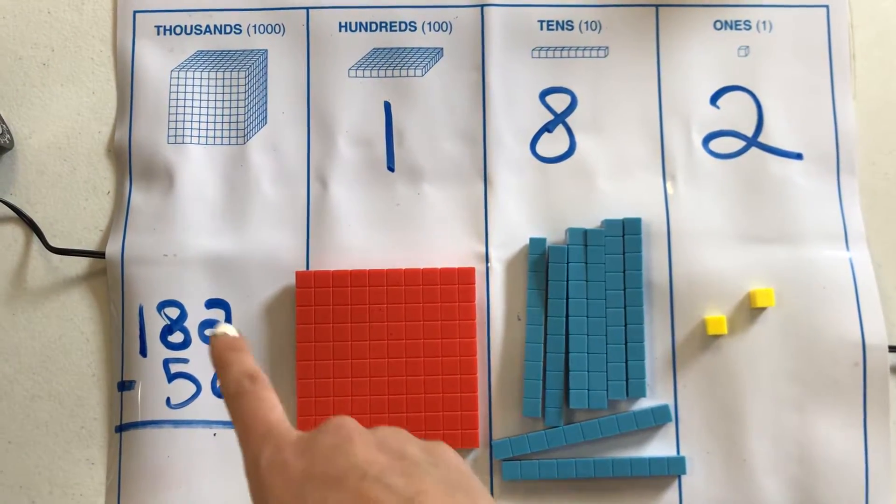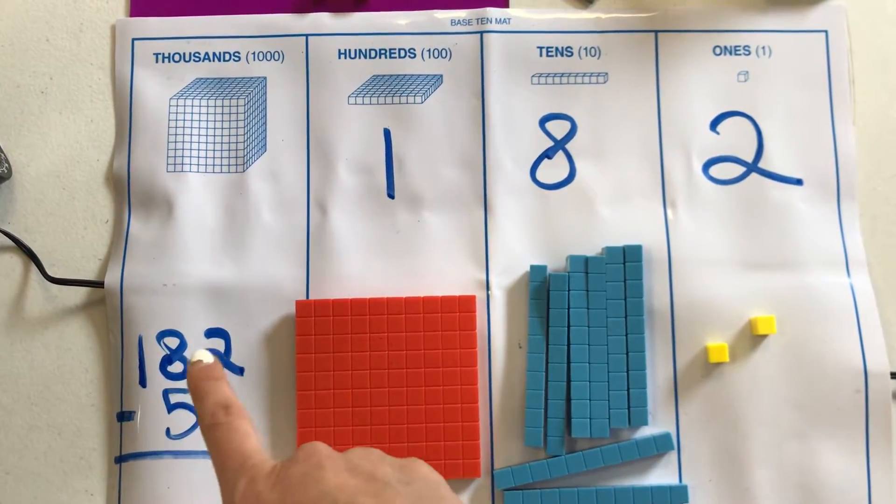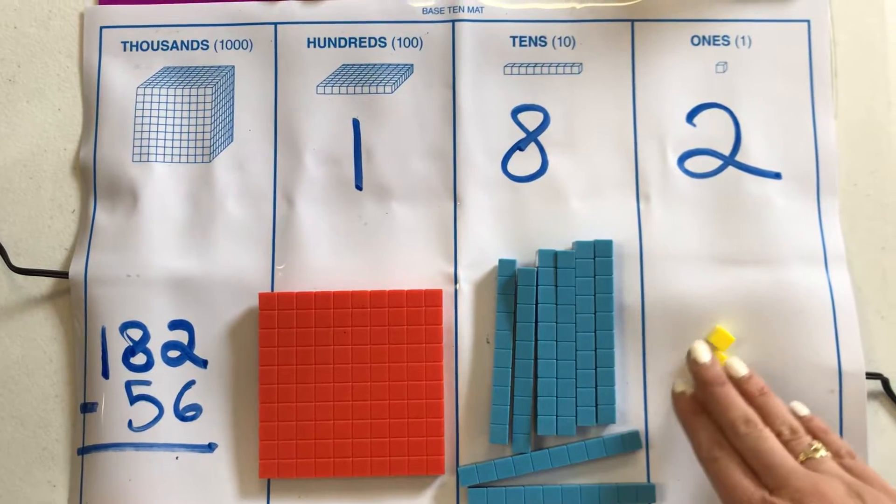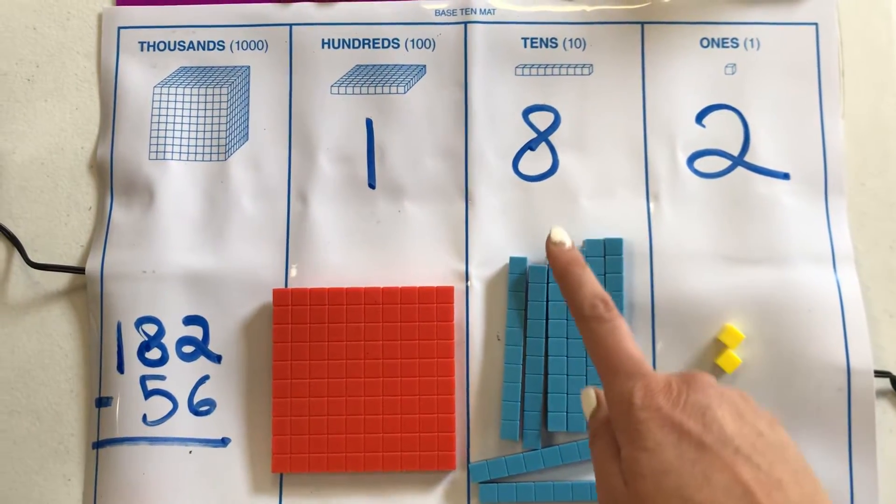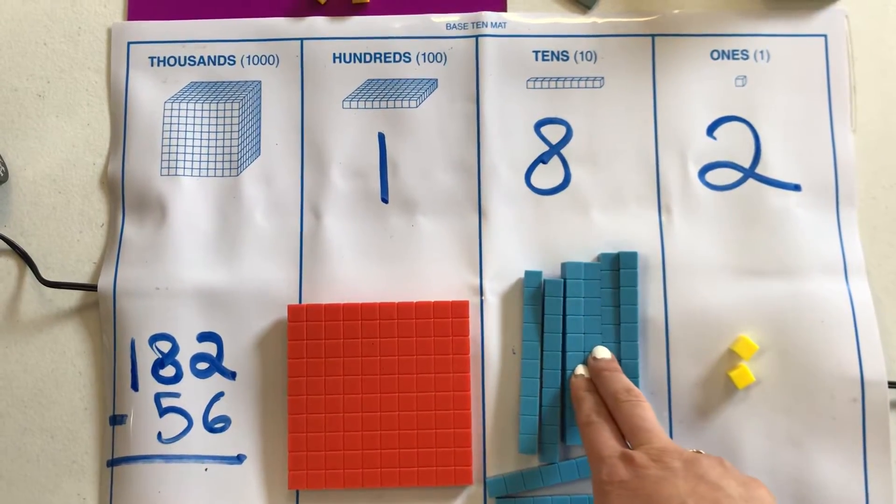But I know that I can borrow some from the other numbers. So let's look. I have two. I want to take away six. I'm going to go next door to my tens column. And you always start by going right next door.